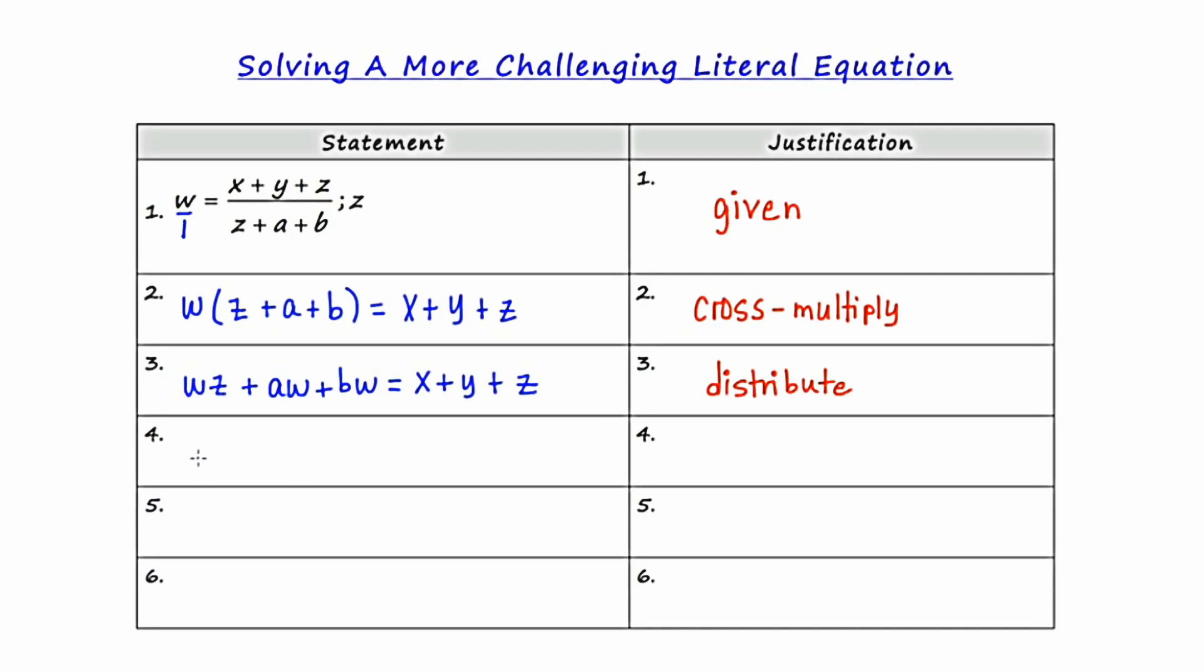So I'm going to ultimately say WZ minus Z is equal to X plus Y minus AW minus BW. So all the things with the Z are going to go to the left, and all the things without Z are going to go to the right. And for my justification, I'm going to write Z party.